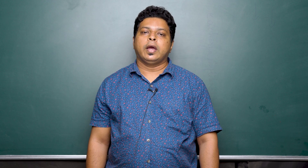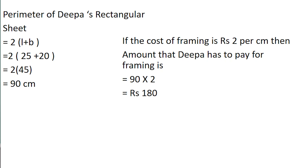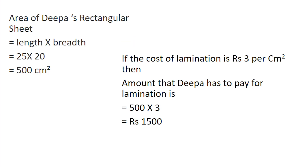Now let us calculate the cost Deepa has to incur for framing and lamination. Perimeter of Deepa's rectangular sheet is equal to 2 into (length + breadth), which is 2 into (25 + 20), which is 2 into 45, giving us 90 centimeters. If the cost of framing is rupees 2 per centimeter, the amount Deepa has to pay for framing is 90 into 2, which is equal to rupees 180. Area of Deepa's rectangular sheet is equal to length into breadth, which is 25 into 20, which is equal to 500 centimeter square.